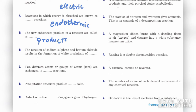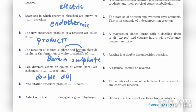The initial substances are known as reactants and the resultant substances are known as products. Sixth: the reaction of sodium sulfate and barium chloride results in the formation of a white precipitate of barium sulfate. Seventh: two different atoms or groups of atoms are exchanged in double displacement reactions.